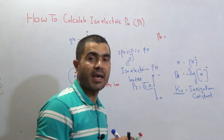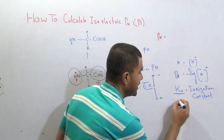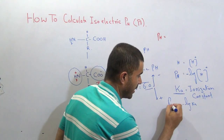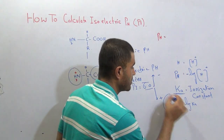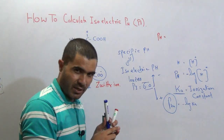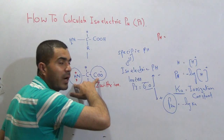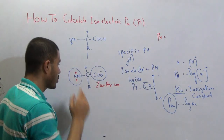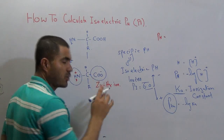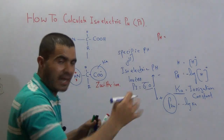To convert Ka to pKa, you simply take the negative log of Ka, and it becomes pKa. So, to determine the isoelectric pH of an amino acid, you check how many ionizable groups there are. If there are two ionizable groups, each group has its own pKa. Since each ionizable species has a Ka, just apply the negative log to get its pKa.